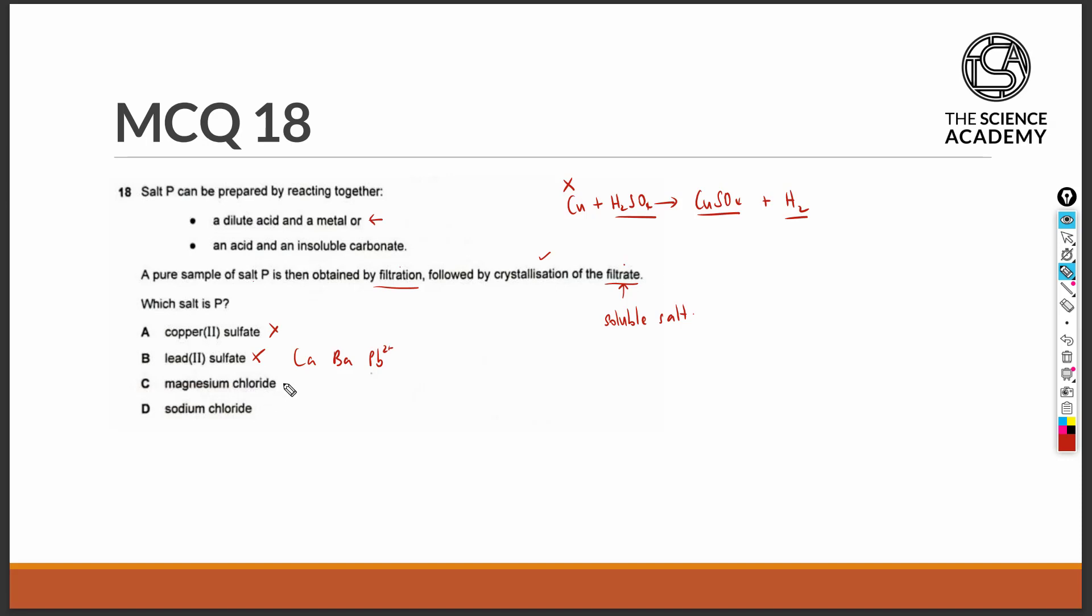Magnesium chloride is indeed a soluble salt. Let's see if it can be obtained by reacting a dilute acid with a metal. To obtain magnesium chloride, the acid must have been hydrochloric acid and the metal must have been magnesium metal. This reaction will take place because magnesium is reactive enough to react with an acid to give us the salt and hydrogen gas.